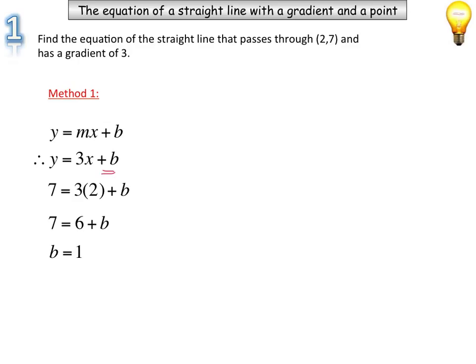Then I can substitute that back into my b value to find out what my equation will be. So y equals 3x plus 1. So that is one method. The second method is from our previous relationship, the y minus y1 equals m brackets x minus x1.